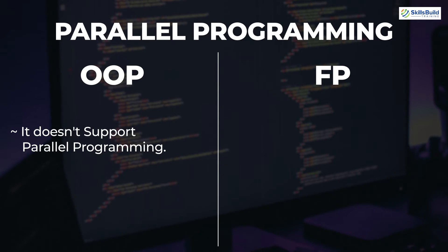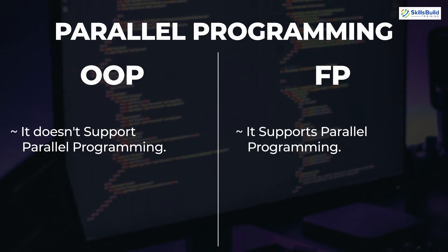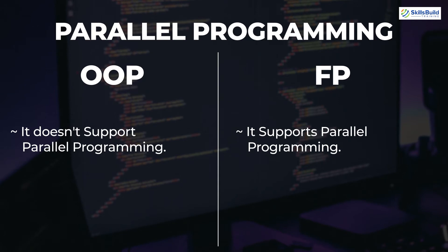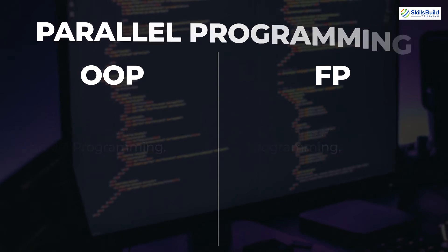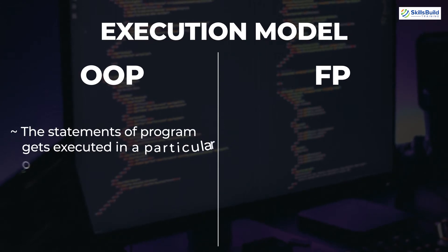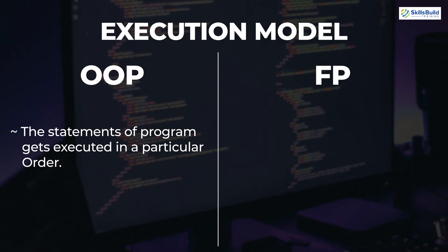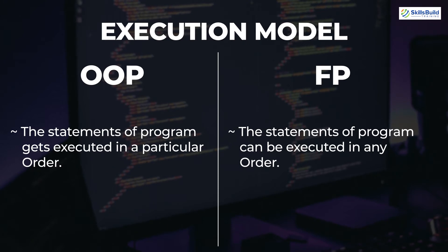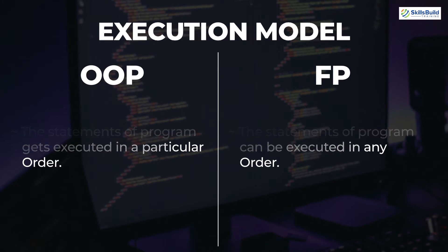The next concept is parallel programming. Object oriented programming does not have support for parallel programming. Functional programming, on the other hand, does support the parallel programming paradigm. By parallel programming we mean having two processes working simultaneously on a single program. Since functional programming uses immutable data and independent functions, we can achieve parallel programming in it. In terms of execution model, OOP statements must be executed in a particular order, whereas in functional programming we can execute statements in any order, since functions can be independent of each other.